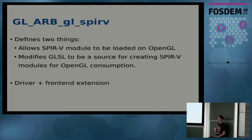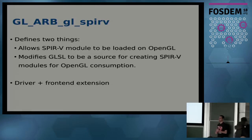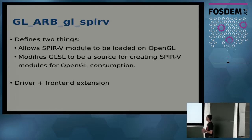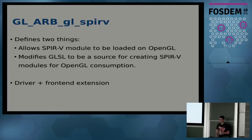After that, they provided the equivalent for OpenGL — that's GL_ARB_GL_SPIRV, the main topic of this presentation. This extension defines two things: the ability for OpenGL to load SPIR-V modules, and also the front-end definitions about which subset of GLSL is expected for the conversion. So it is simultaneously a driver extension and a front-end extension.